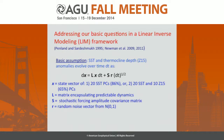Matt Newman has already discussed the LIM framework. Within this framework, the changes in the state vector X are due to a term associated with predictable dynamics as encapsulated by the matrix L, and also by a stochastic forcing term. We are considering two different types of LIMs: the first uses sea surface temperature only, using 20 SST EOFs, and the second also includes thermocline depth, specifically the depth of the 15 degrees C isotherm, referred to as Z15.